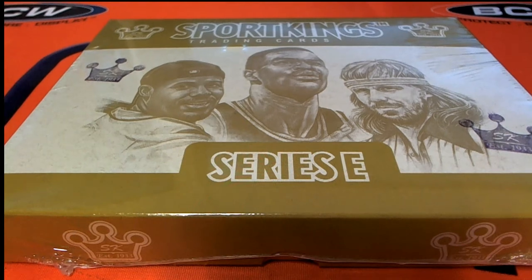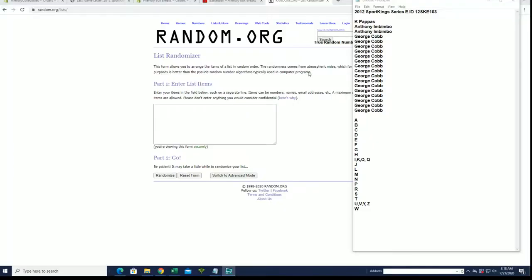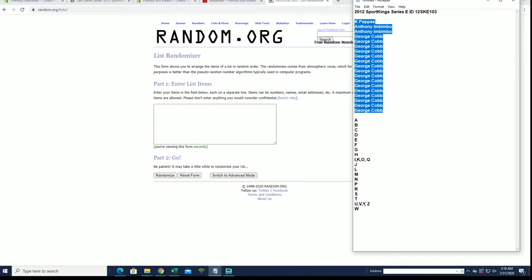All right, last name letter, 2012 Sport King Series E, let's get it. KP down to George C, let's go.